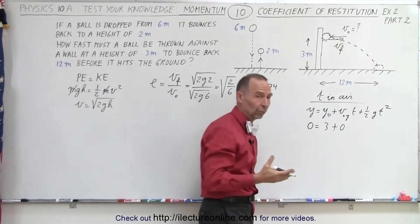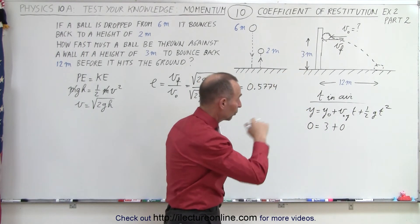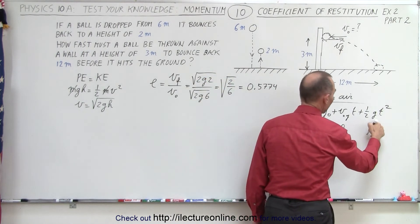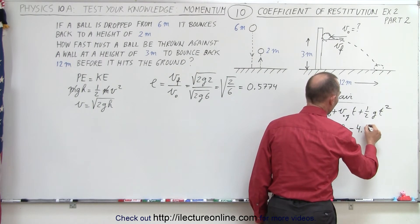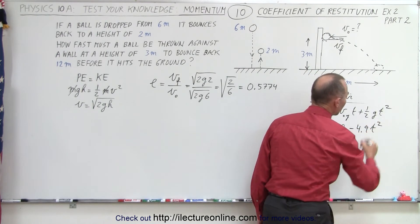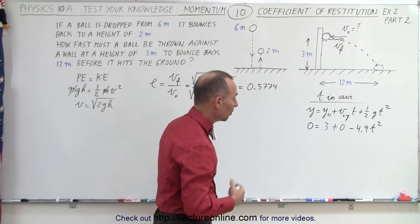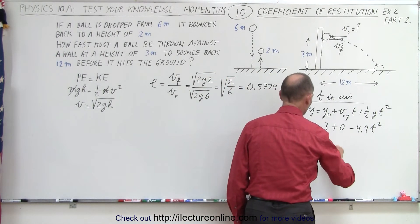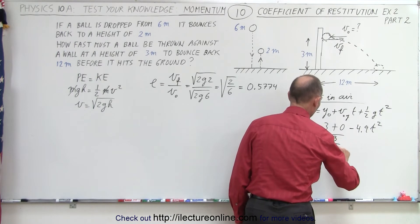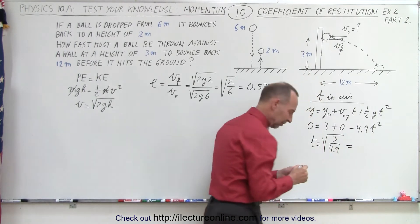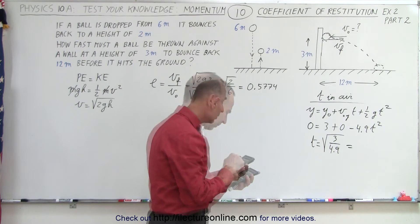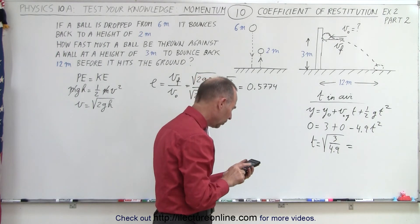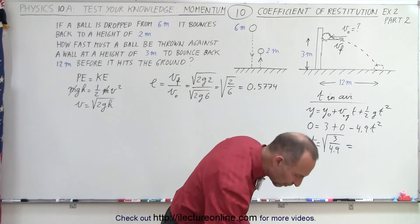And then half g would be minus 4.9 t squared instead of the minus 16 t squared when we use the imperial units. So that means that t is equal to the square root of 3 divided by 4.9. And let's see what that is equal to. And that would be 0.7825.